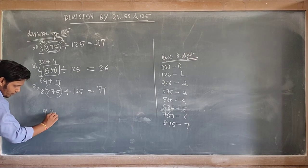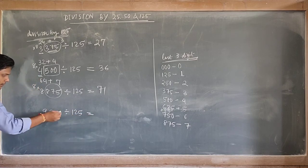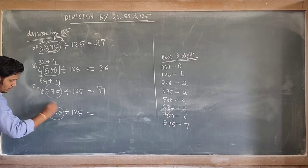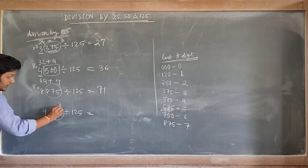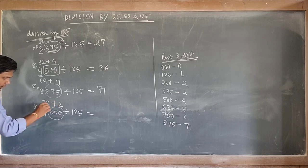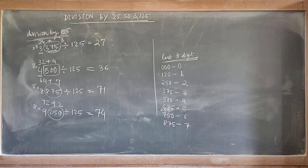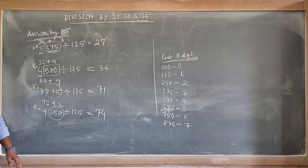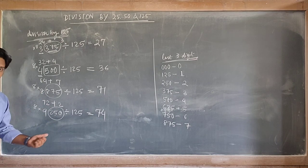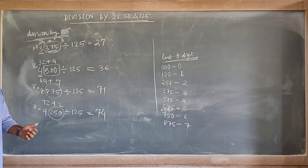Suppose 9250 divided by 125. The last three digits are 250, so we take 2. The remaining digit is 9, multiply by 8: 9 times 8 is 72. Then 72 plus 2 is 74. Your answer is 74. In this way you can find the answer for any number exactly divisible by 125 within seconds. I hope you enjoyed this video — thank you for watching.